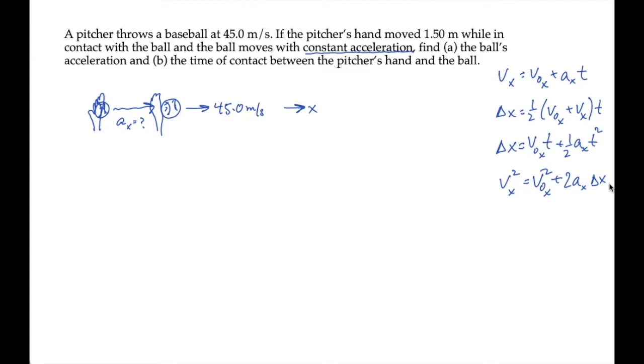Let's start solving this problem by identifying numbers that correspond to variables in our kinematic equations. We know that the ball leaves the pitcher's hand at 45 meters per second. So that's the final velocity, v_x, the velocity at the end of the motion. Everywhere we have a v_x, that's 45 meters per second. We're asked to find the acceleration, so we don't know that. But we do know that the pitcher's hand and the ball move one and a half meters. That's the ball's displacement, delta x.